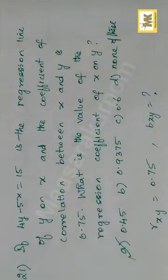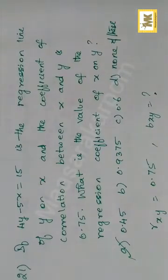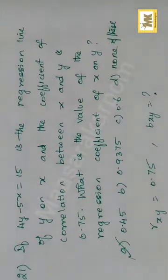If 4y minus 5x is equal to 15 is the regression line of y on x, and the coefficient of correlation between x and y is 0.75, what is the value of the regression coefficient of x on y?